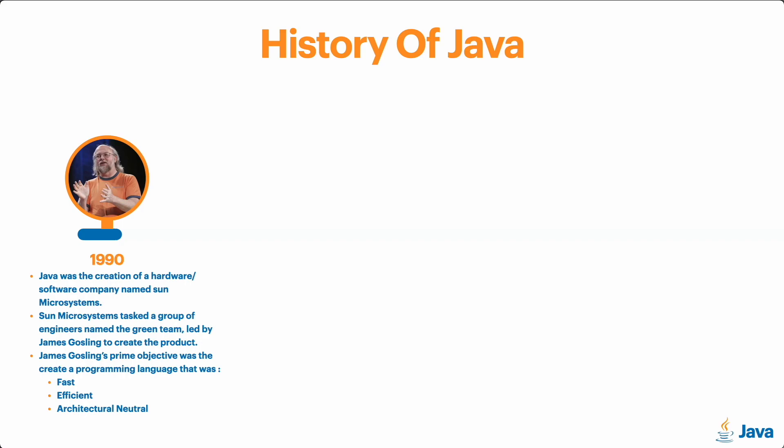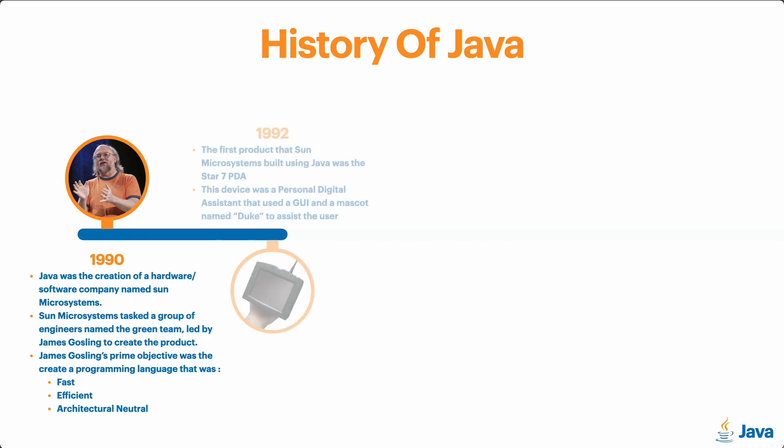The first commercial launch of Java came in 1992 in the form of the Star 7. Sun Microsystems released a personal digital assistant named Star 7 whose software was written in Java. The Star 7 PDA used a GUI — a graphical user interface — and a mascot named Duke to assist the user. It was kind of like an early iPad. Unfortunately, the Star 7 wasn't as much of a success as Sun Microsystems hoped, so they figured that consumer electronics wasn't the best purpose for Java, since Java was far more capable than just that.